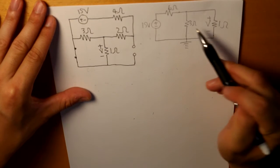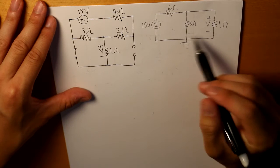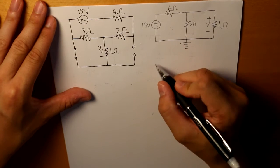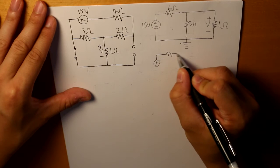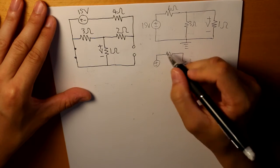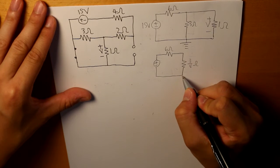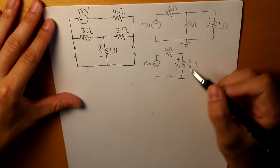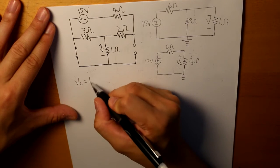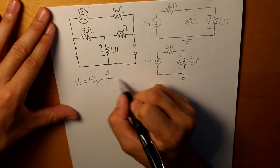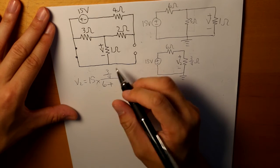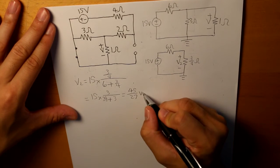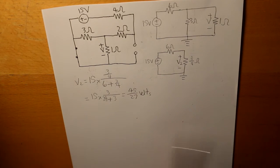We find the equivalent parallel resistance of the 3-ohm and 1-ohm resistors, which gives 3/4 ohms. Applying voltage division, V2 equals 15 times (3/4) divided by (6 plus 3/4), which gives 45/27 volts. That is our V2.